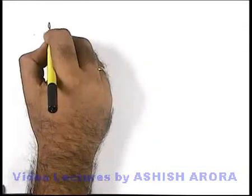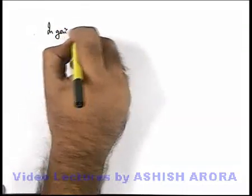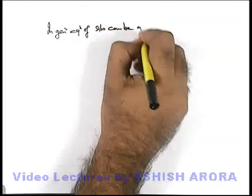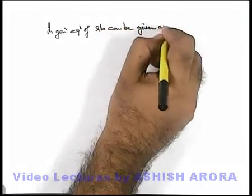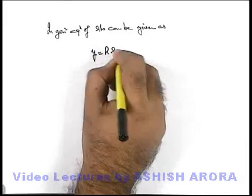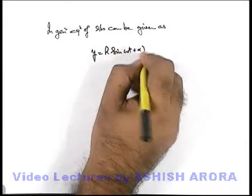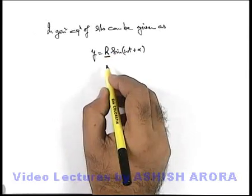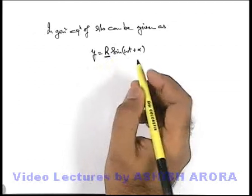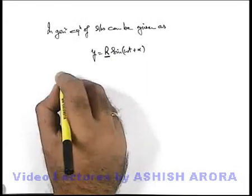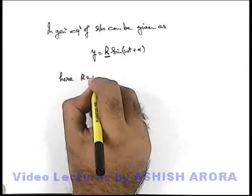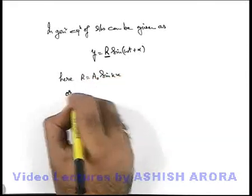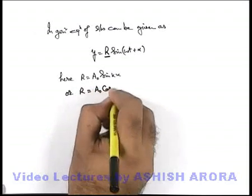As discussed, we can write in general equation of stationary wave can be given as y = R sin(ωt + α), where R is the amplitude of different medium particle oscillations which depends on their position. Where we can write here R can be written as A₀ sin(kx) or R can be written as A₀ cos(kx).